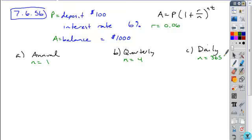It's just a matter of taking that equation and plugging in the values. 1000 equals 100 times 1 plus 0.06 over 1 to the 1 times T, and solve for T.